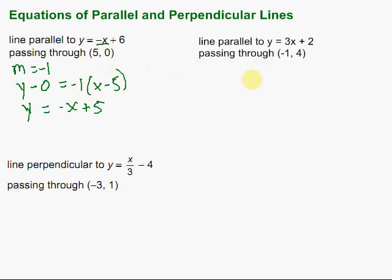Let's take a look at another parallel line example — finding a line that's parallel to this one through this point. Again we need to find the slope. There it is, right with the x: the slope is 3. So the slope of our parallel line is also going to be 3.